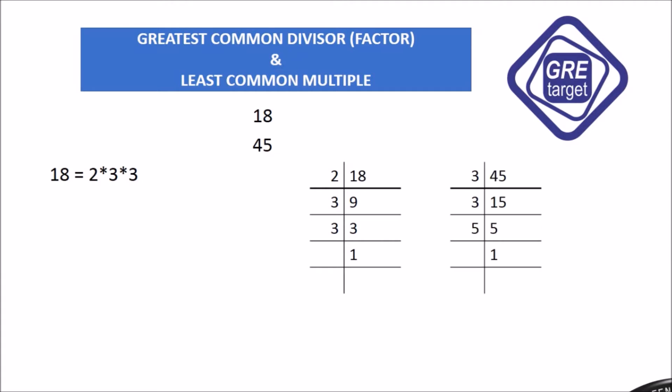45 is not divided by 2. It is divided by 3. 3 fifteens are 45. Same way, we divide 15. 3 fives are 15. 5 ones are 5. So we get the answer: 45 equals 3 into 3 into 5.